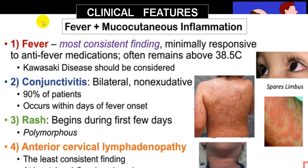The clinical picture: fever plus mucocutaneous inflammation is the earliest finding. Fever is the most important and most consistent finding. The patient will have fever that is minimally responsive to antipyretics and usually remains close to 38.5°C or higher. Whenever fever persists for a longer period in spite of oral antipyretics, do consider Kawasaki disease. Further suspicion is raised by mucocutaneous inflammation — that is, conjunctivitis, which is bilateral and non-exudative. This is very important: the conjunctiva is inflamed in 90% of patients within days of fever onset.